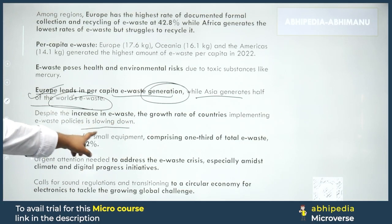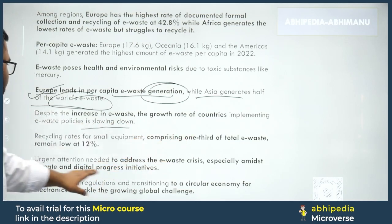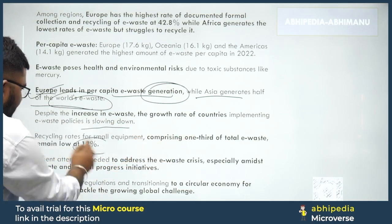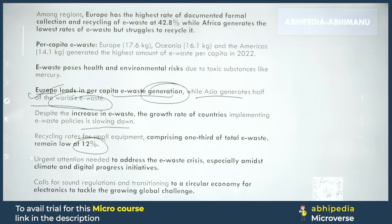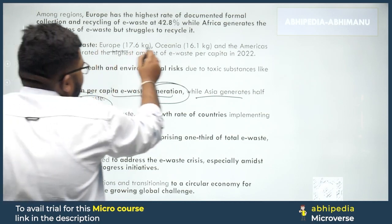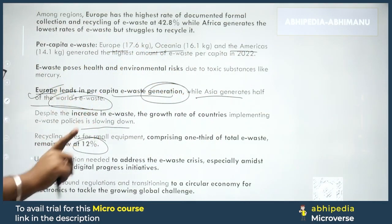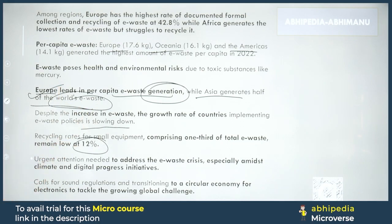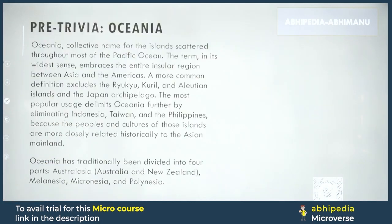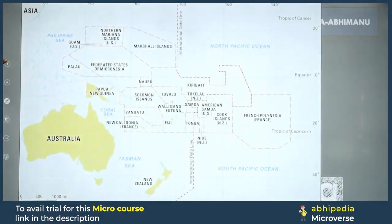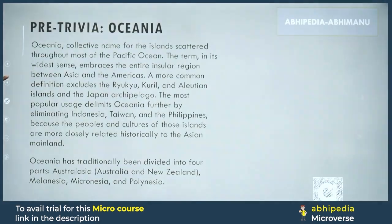Recycling rates for small equipment, which comprises one-third of total e-waste, remains low at 12%. Per capita e-waste rankings: Europe leads, followed by Oceania, then the Americas. For your trivia, the Oceania map is shown here — pause the video, take a screenshot and read it.